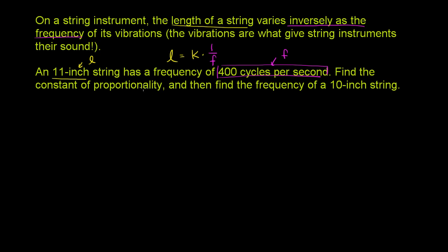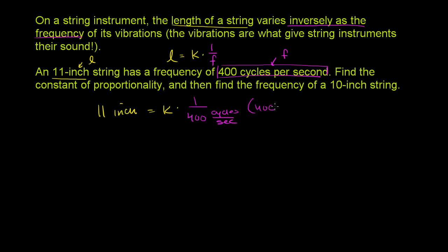Find the constant of proportionality, and then find the frequency of a 10-inch string. So they say an 11-inch string is equal to some constant of proportionality times 1 over 400 cycles per second. To solve for the constant of proportionality, we need to multiply both sides by 400 cycles per second.